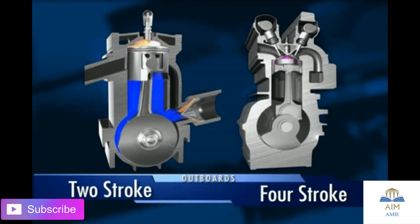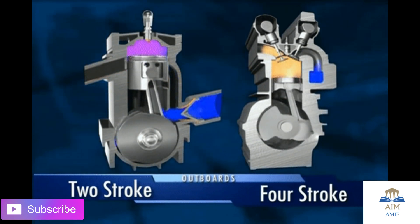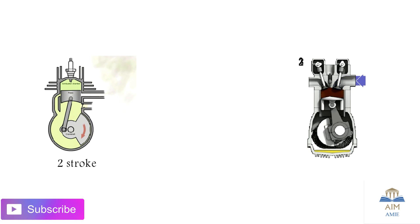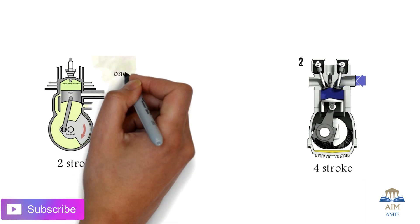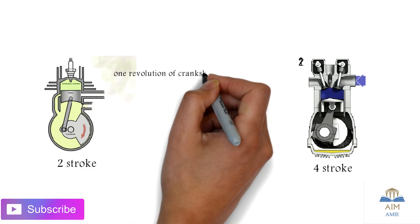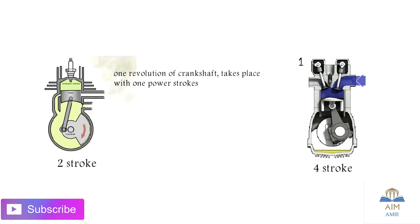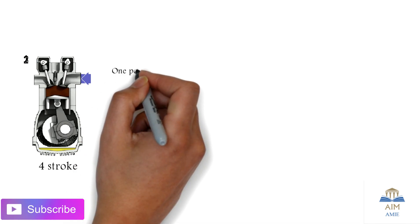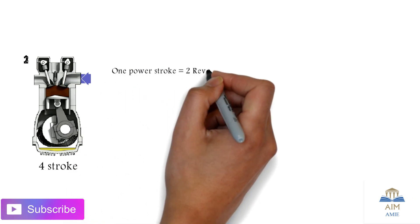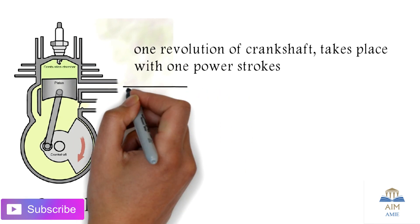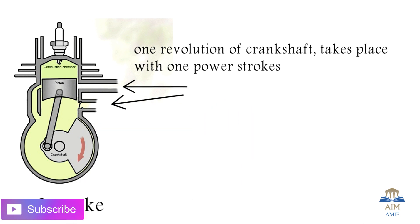Here we have the two-stroke engine and the four-stroke engine — you can see the working of these particular engines. This is the schematic representation of the two-stroke engine, and this is an animation of the four-stroke engine. In the two-stroke engine, one revolution of the crankshaft takes place with one power stroke — a ratio of 1:1 — whereas in the four-stroke engine, one power stroke gives two revolutions of the crankshaft, a ratio of 1:2.